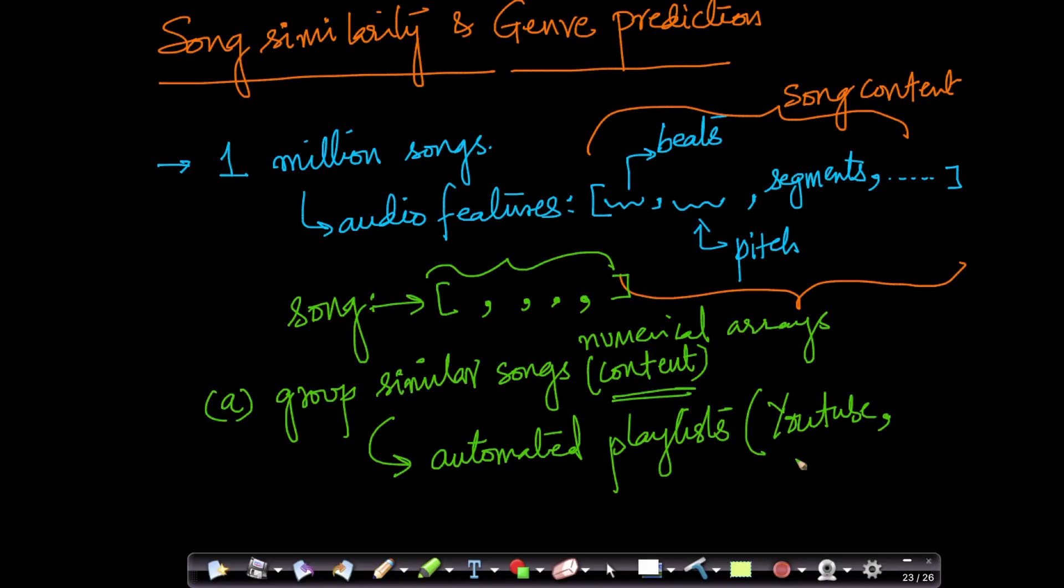And one of the components of that algorithm is content-based grouping or similarity of songs. So this also is done a lot by companies like Pandora, Spotify, etc., which are music streaming companies, very massive music streaming companies. So you can create an automated playlist based on song similarity, based on the content of the song similarity. This is one of the problems that we solve.